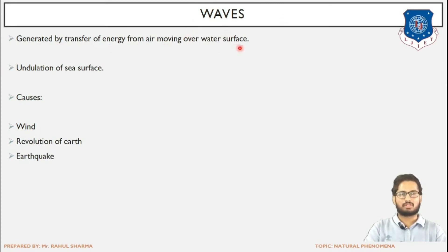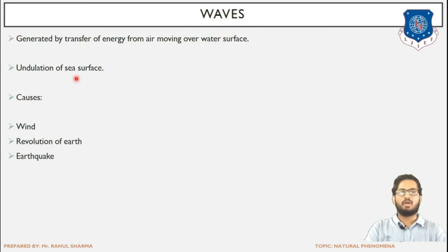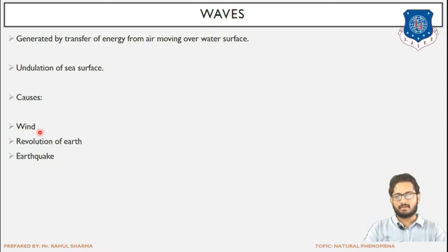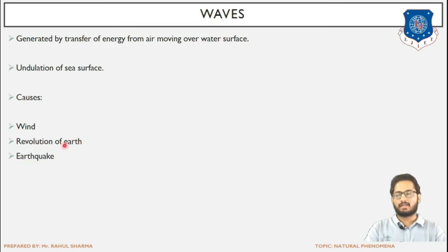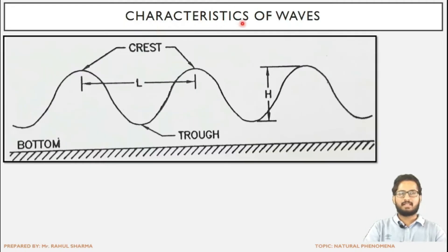Next is waves. Waves are generated by the transfer of energy from air moving over a water surface. The basic cause of wave generation is the moving air — that is wind — which transfers energy and creates undulation on the surface. This undulation or irregularity on the sea surface is caused first and foremost by wind. Revolution of the earth and earthquakes — that is the collision of tectonic plates — also generate waves.